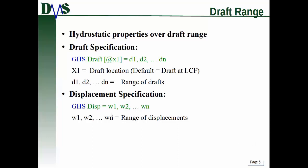There's a shorthand notation in GHS: instead of typing out every single displacement you want, you give the first one, the second one (which establishes the spacing), then type dot dot dot, and then your last displacement. That works for drafts or displacements — GHS will fill in everything in between. Alternatively, you can specify GHS disp equals followed by a range of weights to work on a displacement basis.